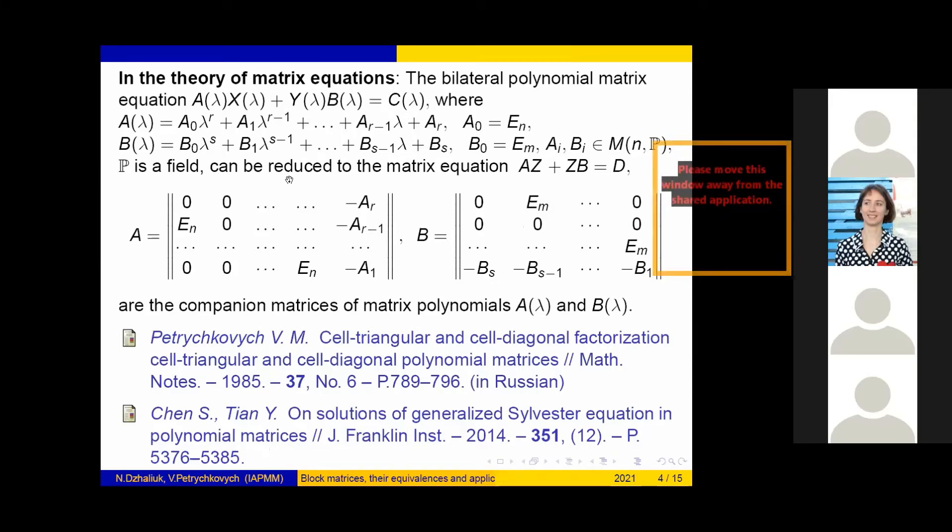This equation can be reduced to the matrix equation AZ + ZB = D, where A and B are the companion matrices of matrix polynomials A(λ) and B(λ). The last equation is the matrix equation of the field.